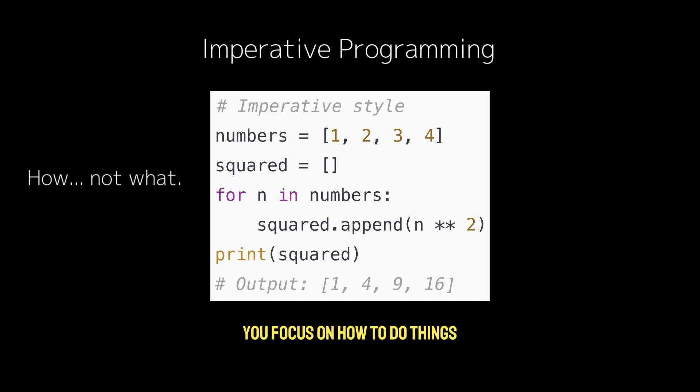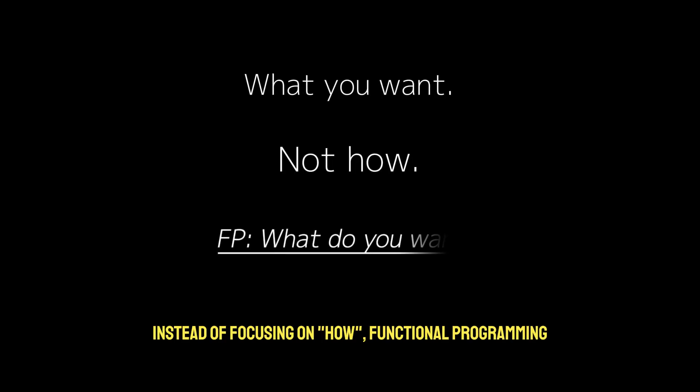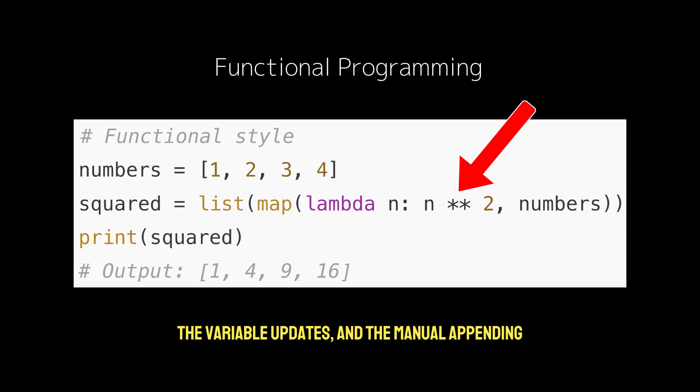You focus on how to do things. Now think about describing what you want. Instead of focusing on how, functional programming asks you to describe what you want. Here's an example in functional style. Here you're saying map this function n to the power of 2 over the list of numbers. You're skipping the explicit loop, the variable updates, and the manual appending.